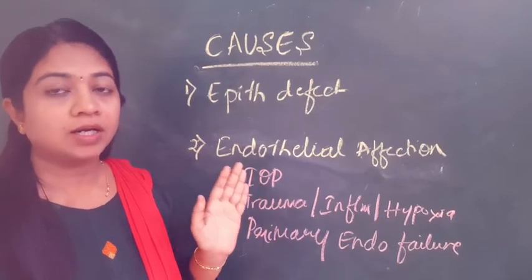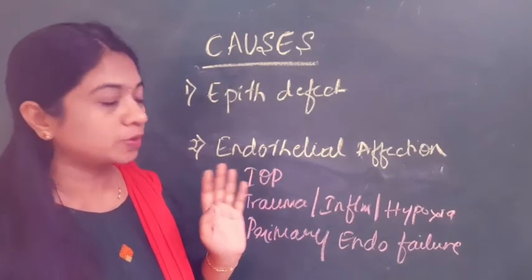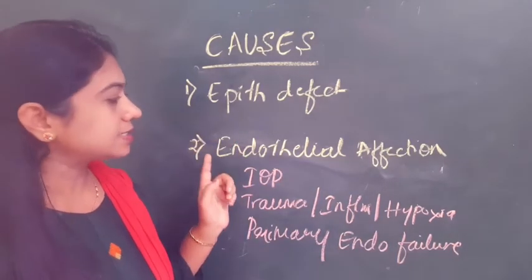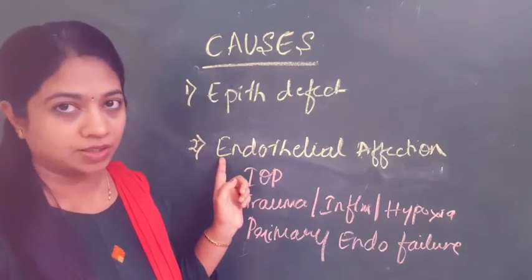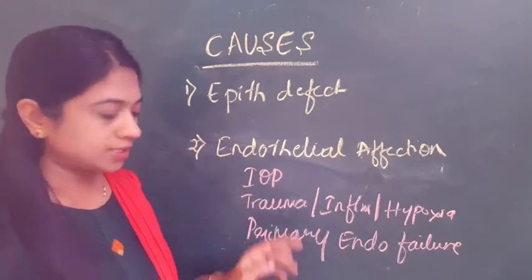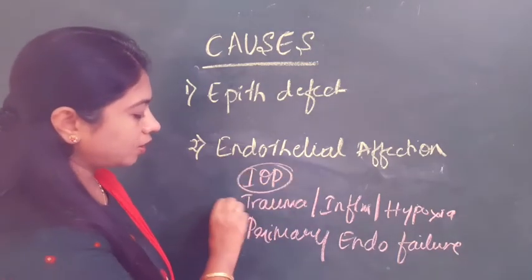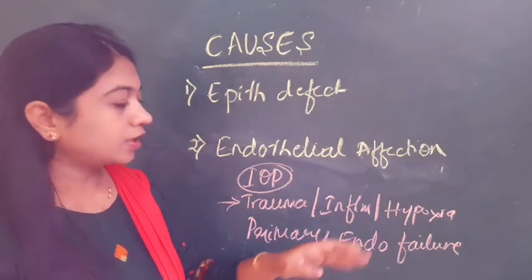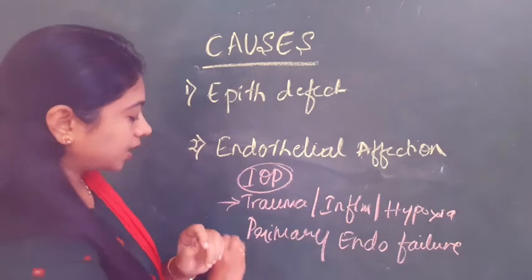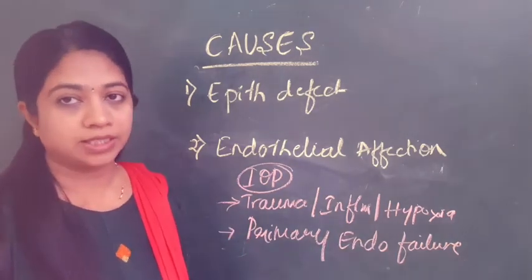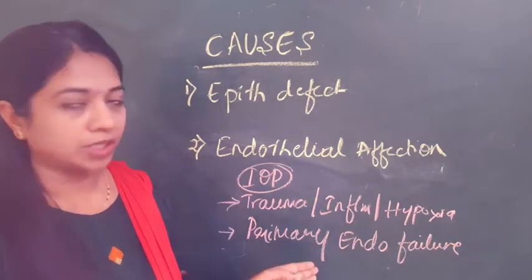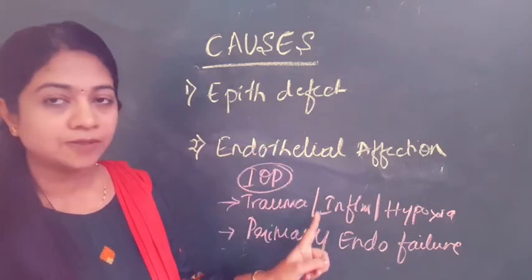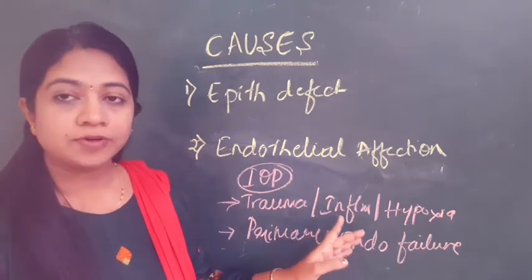The various causes for corneal edema can be categorized into three groups. The first is epithelial defect. The second is endothelial dysfunction, which can be secondary to raised intraocular pressure, trauma, inflammation, hypoxic conditions, or medications. The third is primary endothelial failure, such as in hereditary endothelial dystrophies.